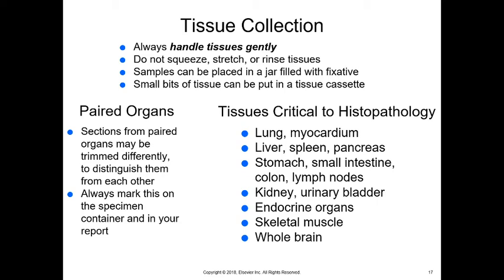Critical tissues to submit include lung, myocardium (heart), liver, spleen, pancreas, stomach, small intestine, colon, lymph nodes, kidney, urinary bladder, endocrine glands, skeletal muscle, and whole brain. The basic essential ones are lung, heart, liver, and kidney — with the spleen depending on what you observe and what you're investigating during the necropsy.